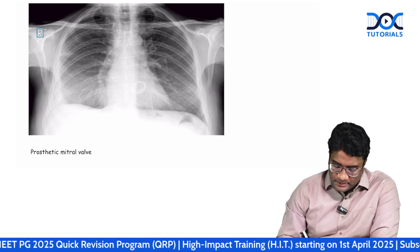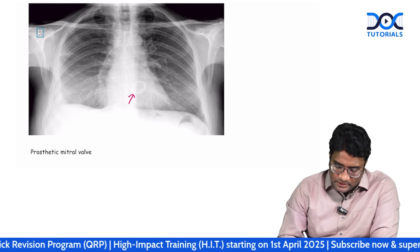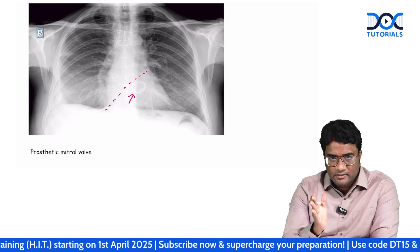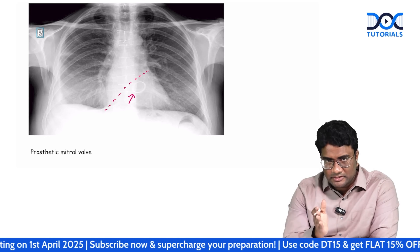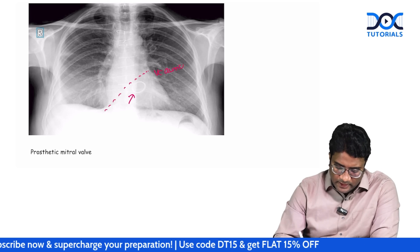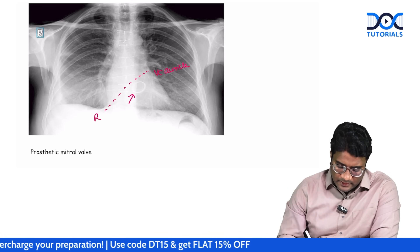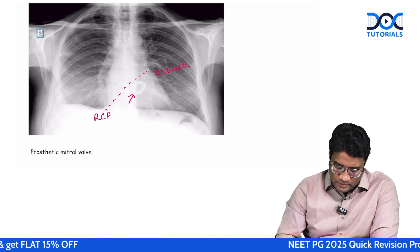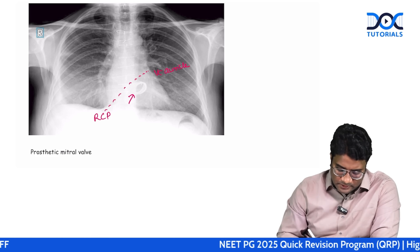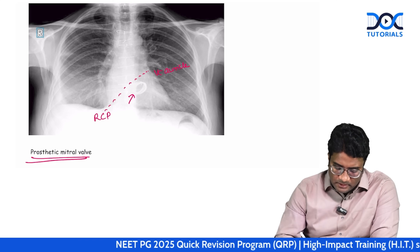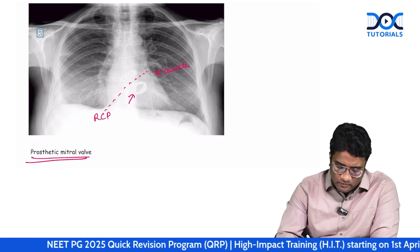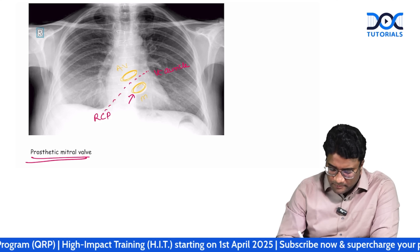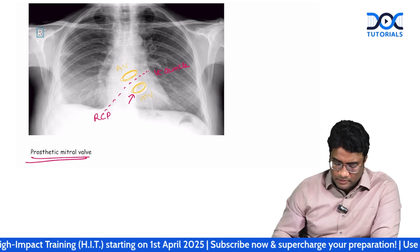Here you can see a prosthetic heart valve located below the imaginary line drawn from the left auricle, just below the left hilum, to the right cardiophrenic angle. If the valve is above this imaginary line, it is an aortic valve; if below, it is a mitral valve. That is how you identify prosthetic heart valves on radiograph.